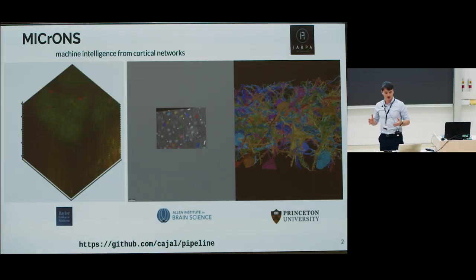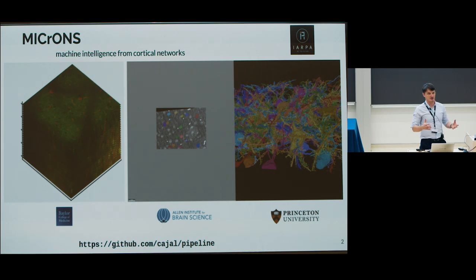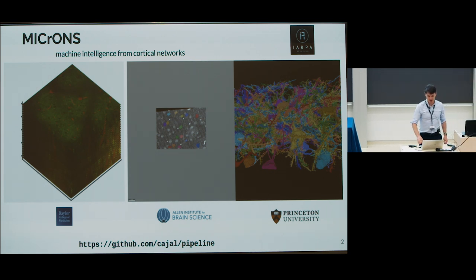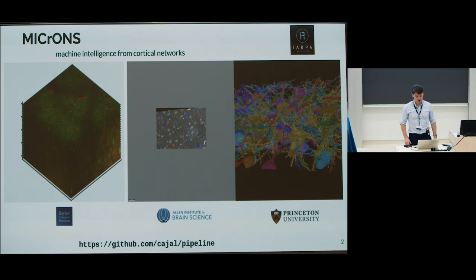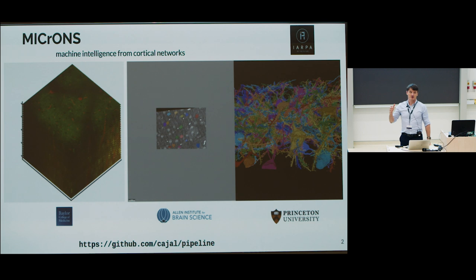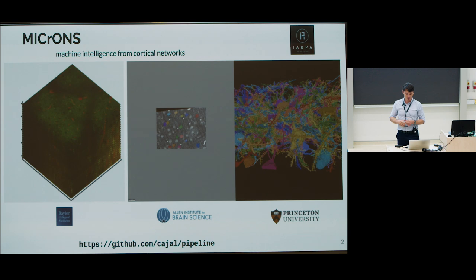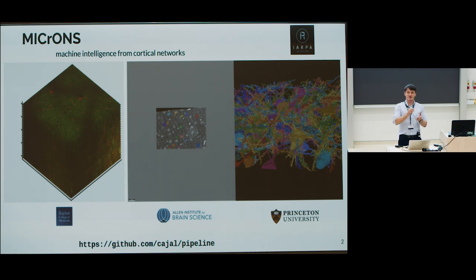Just for context, one project we've been involved in shows some of the challenges of running large distributed multi-investigator, multi-modality experiments. This project is called MICRONS, standing for Machine Intelligence from Cortical Networks. Part of it involves three groups working at Baylor College of Medicine, acquiring two-photon calcium data from mice — a full cubic millimeter using two-photon and three-photon imaging — where every neuron is fully characterized in terms of its visual response properties.